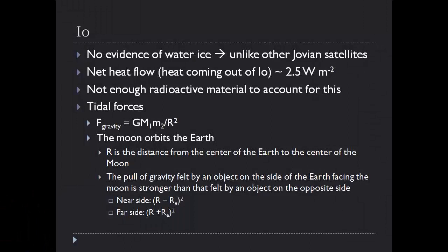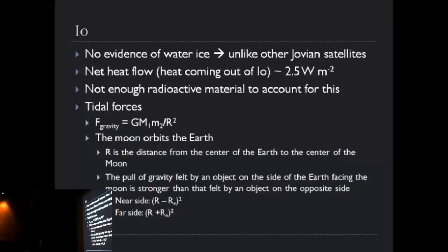Io has no evidence of water, unlike the other moons of Jupiter. It has a huge heat flow — it's warm, creating lots of energy in the interior that is flowing out — and the tidal forces are probably the cause of all this.